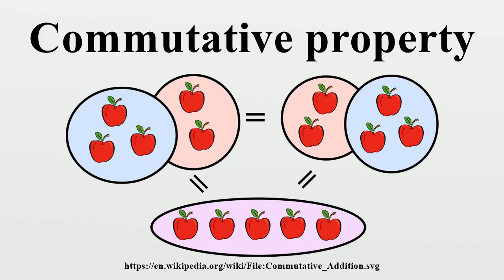Propositional Logic — Rule of Replacement: In truth-functional propositional logic, commutation or commutativity refers to two valid rules of replacement. The rules allow one to transpose propositional variables within logical expressions in logical proofs. Commutativity is a property of some logical connectives of truth-functional propositional logic. The following logical equivalences demonstrate that commutativity is a property of particular connectives, and the following are truth-functional tautologies.